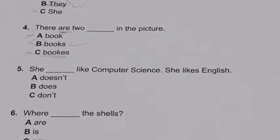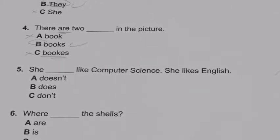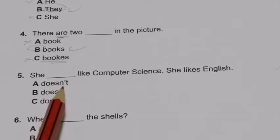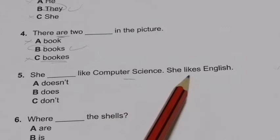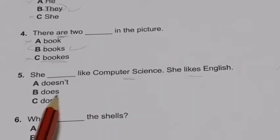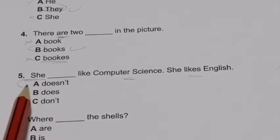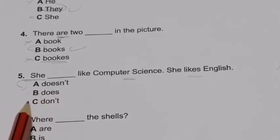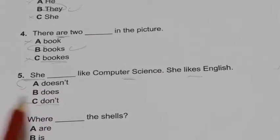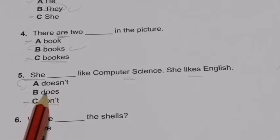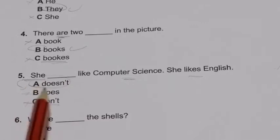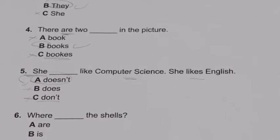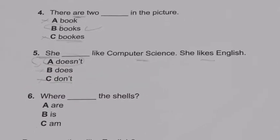Number 5: 'She ___ like computer science, she likes English.' The options are doesn't, does, or don't. This is a contrast sentence. She is third person singular, so it deals with 'does' or 'doesn't.' I cancel 'don't,' and 'doesn't' is the good one here for contrast.